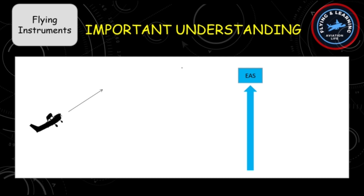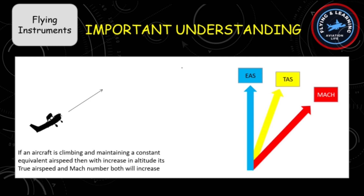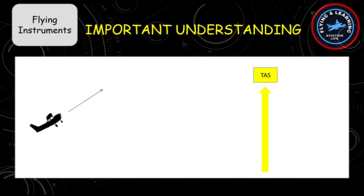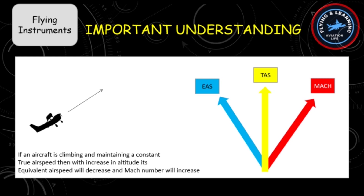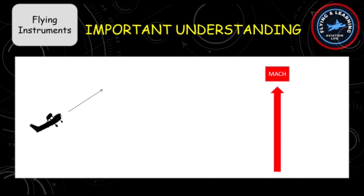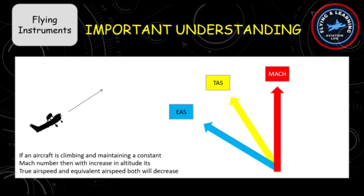As an aviator, you need to understand important relationships between speeds. If an aircraft is climbing and maintaining a constant equivalent airspeed, then with increasing altitude its true airspeed and Mach number both will increase. If it maintains a constant true airspeed during climb, its equivalent airspeed will decrease but Mach number will continue to increase. If an aircraft climbs while maintaining a constant Mach number, its true airspeed and equivalent airspeed both will decrease.